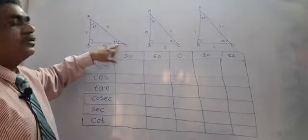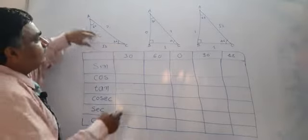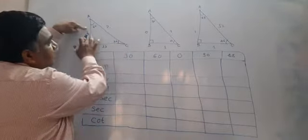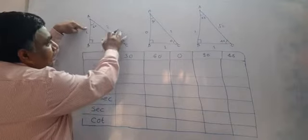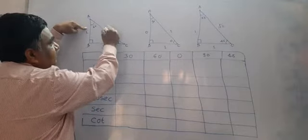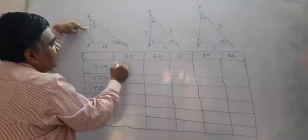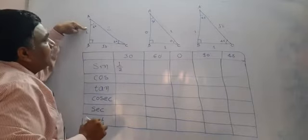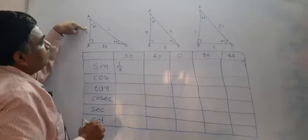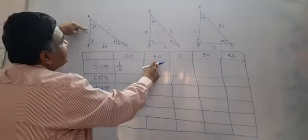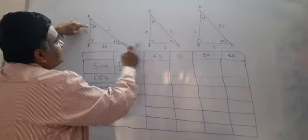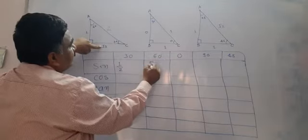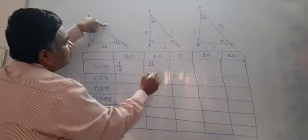If you go for sine 30, the opposite side is 1 upon hypotenuse, so it will become 1 upon 2. If you go for sine 60, the opposite side is root 3 upon hypotenuse which is 2, so it becomes root 3 upon 2.